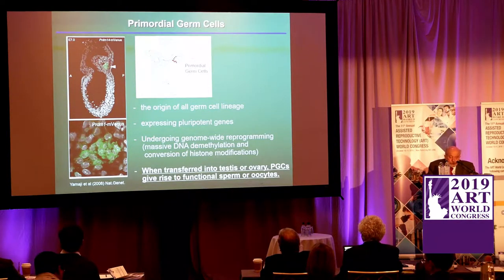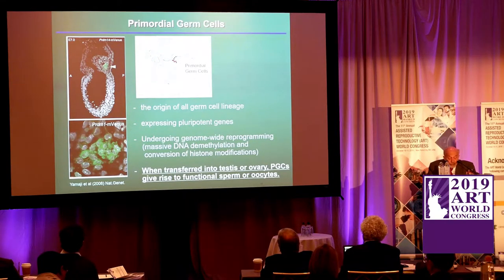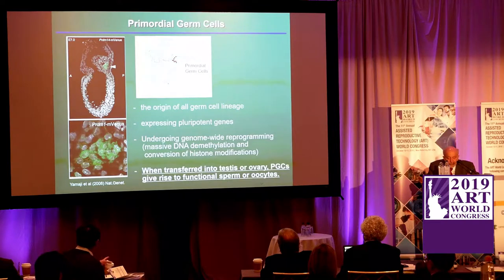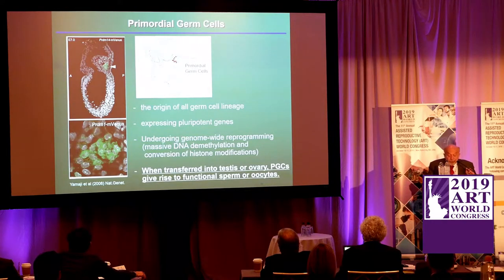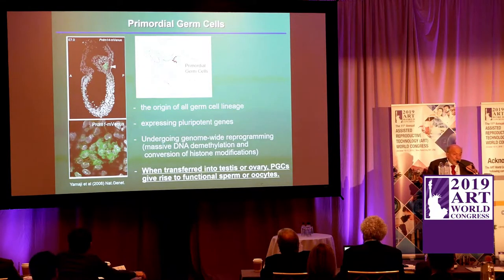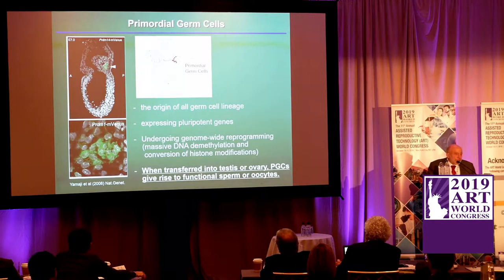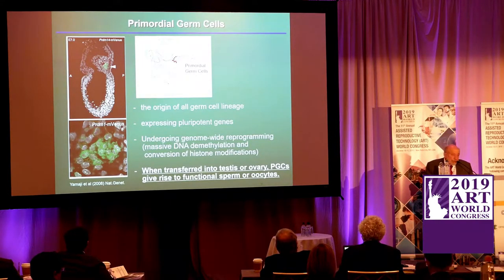This is the origin of the germ cell lineage, which actually expresses pluripotent genes — but it's very tricky. If expression of those pluripotent genes were functional, then when the cell goes into the ovary or testes you would have a tumor. It's expressing the genes but not as a functional expression. When transferred into the testes or ovary, PGCs give rise to functional sperm or oocytes. You don't want to be injecting stem cells directly into ovary or testes, or you'll get a tumor.